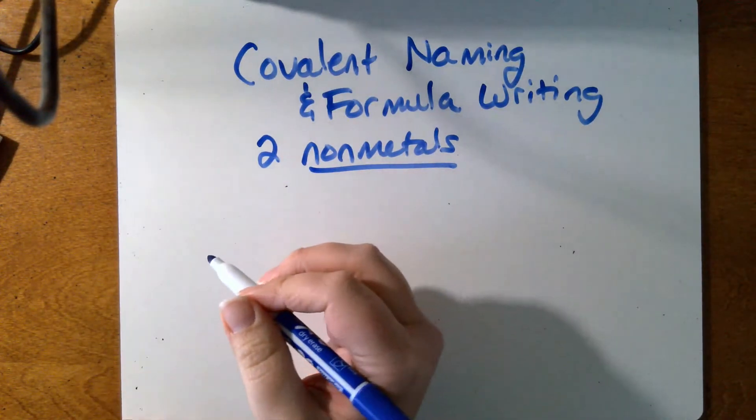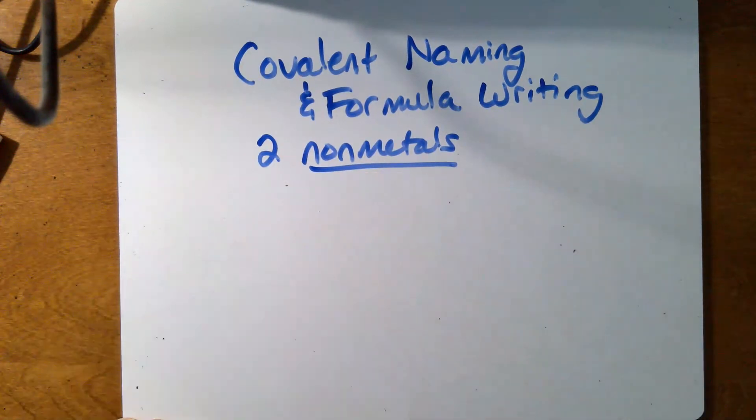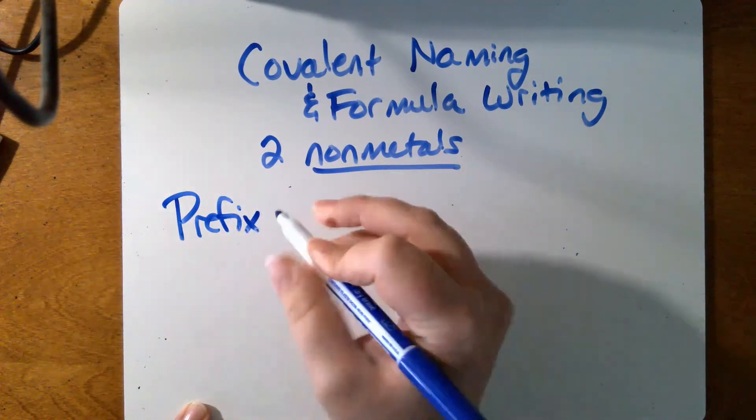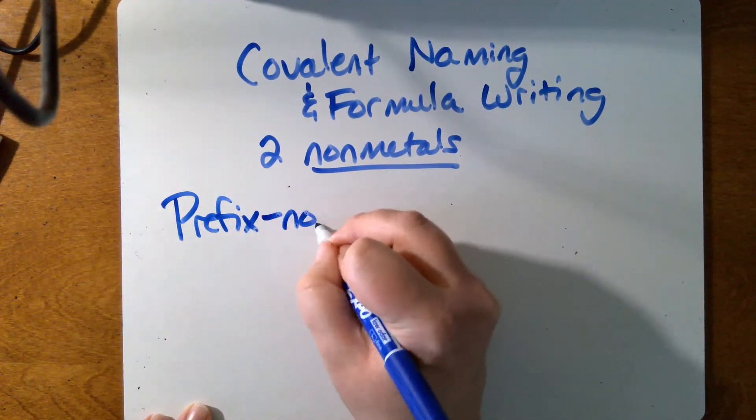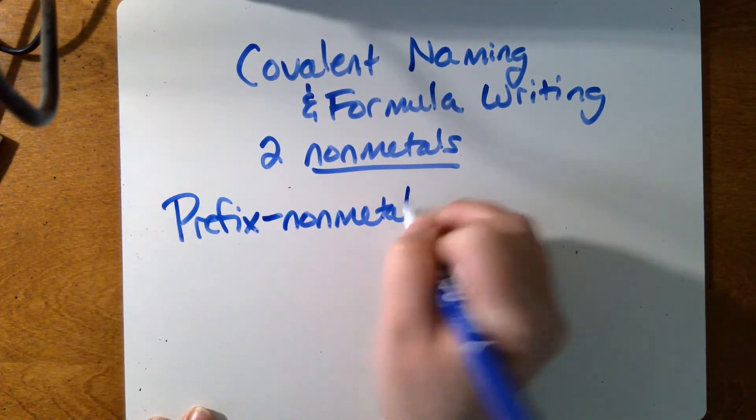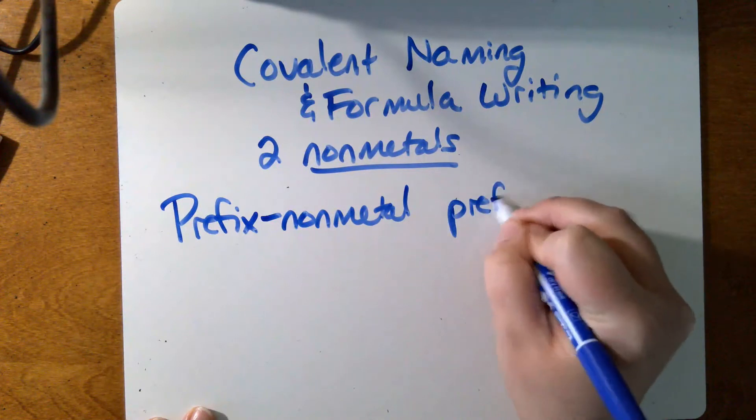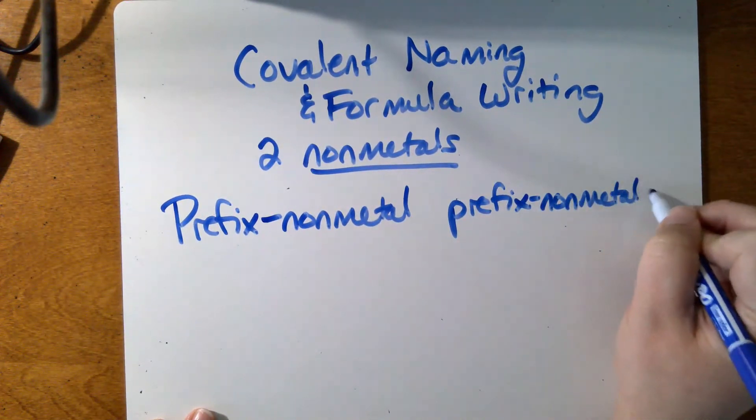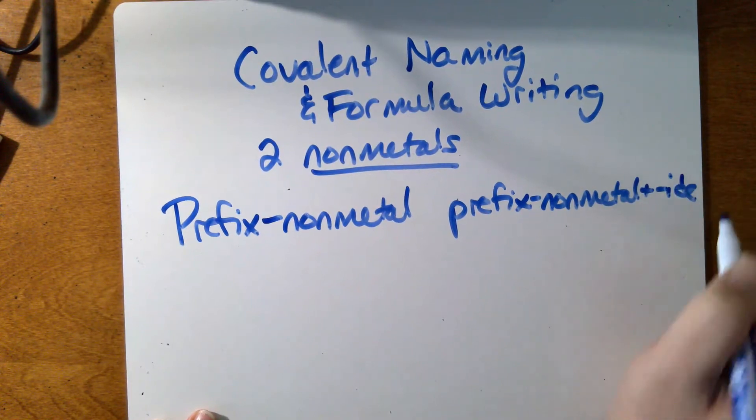So when we name covalent compounds, we have a general formula. We write the prefix, and I'll talk about those in a minute, plus the name of the first non-metal. And then another prefix, the name of the second non-metal, plus the suffix "-ide."